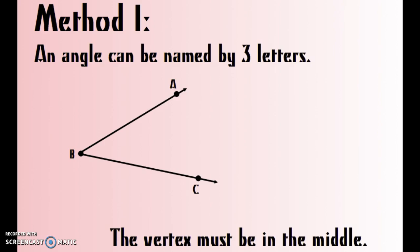So the first and most traditional method is that an angle can be named by three letters. The important thing is the vertex must be in the middle.